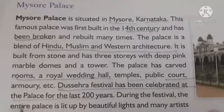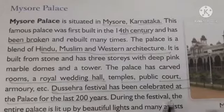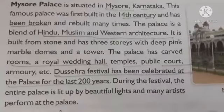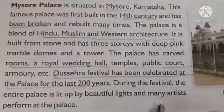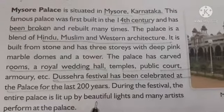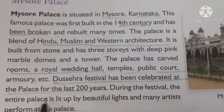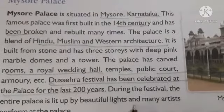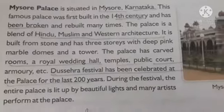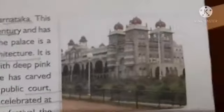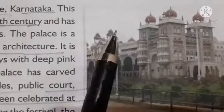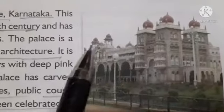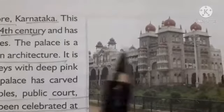The Dasara festival has been celebrated at the palace for the last 200 years. During the festival, the entire palace is lit up by beautiful lights and many artists perform at the palace. 'Lit up' means it looks great with beautiful lights. This is the picture of Mysore Palace — you can see the domes in pink color, one, two, three, four, five — these domes are visible here.